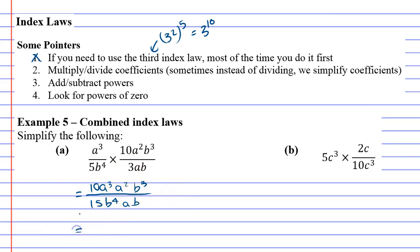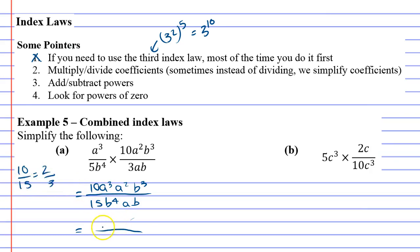Now we can really focus on step 2, which is to multiply and divide coefficients, because I can do 10 over 15. Now you might remember that when you can't divide evenly, you need to simplify. And 10 over 15 is actually the same as 2 thirds. So we're just going to rewrite this as 2 over 3.